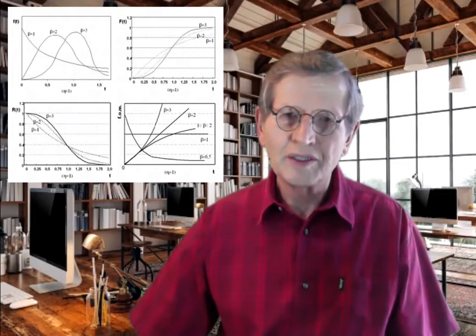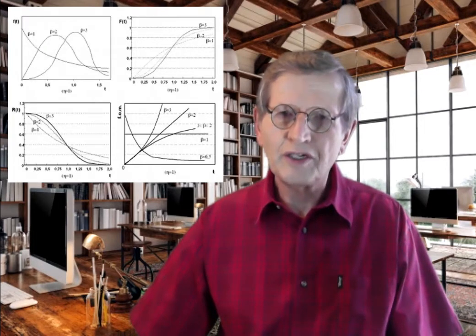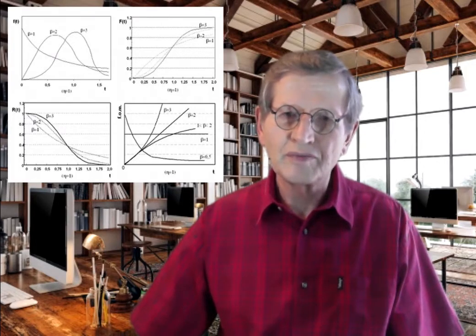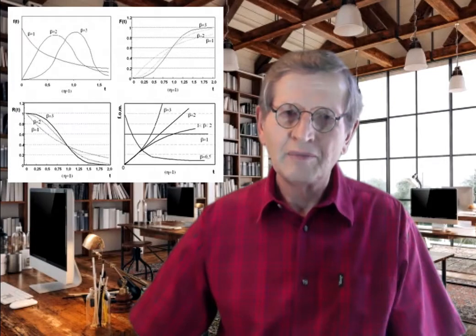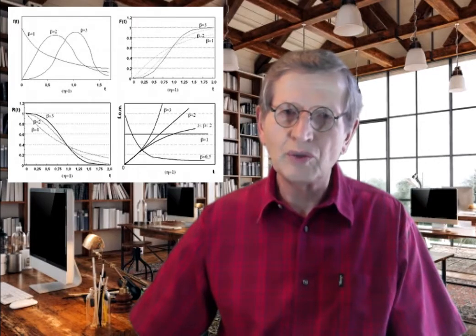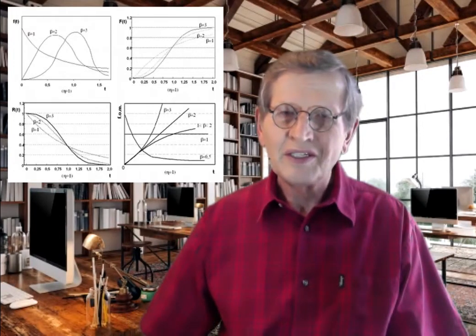The special case of beta equals 1 simulates the exponential distribution — that is, the hazard or force of mortality is constant. For beta in the order of 3.5, the Weibull distribution simulates the normal distribution — the hazard or force of mortality is strongly increasing. Beta smaller than 1 results in a decreasing hazard, beta equals 1 in a constant hazard, beta between 1 and 2 gives a convex increasing hazard, beta equals 2 gives a hazard rising in proportion to use, and beta larger than 2 gives a concave strongly increasing hazard.